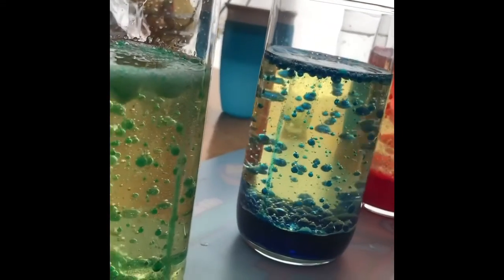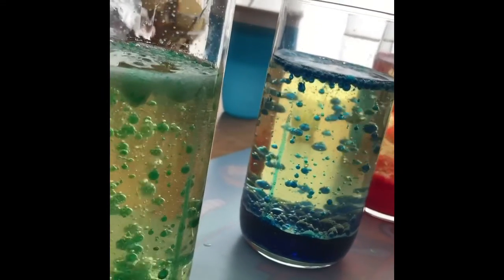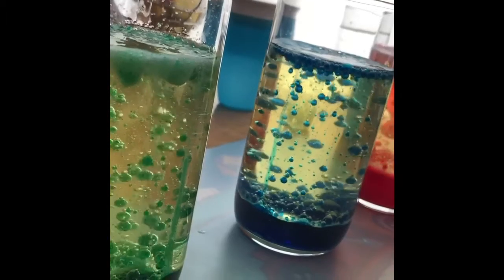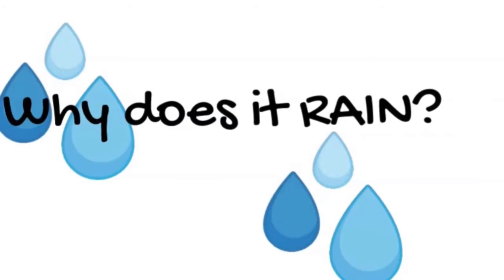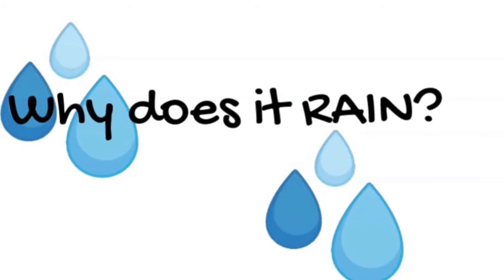Now that you've had some fun making lava lamps of your own, let's talk about how they can teach us about weather. First up: rain. Before we can fully understand how a lava lamp relates to rain, we have to understand why it rains.